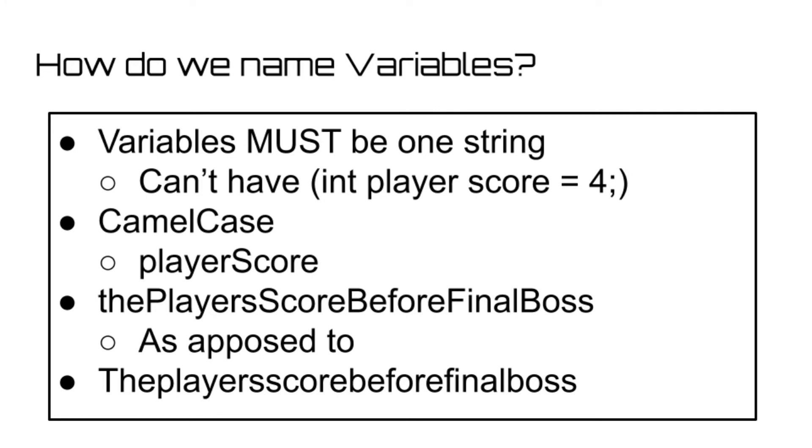Whereas if we just typed it out completely, it would be really confusing as theplayersscorebeforefinalboss. This will help a ton when you start to find bugs in your code and need to quickly scan your program to figure out which variables are not performing like they're supposed to and what's going on with your code.